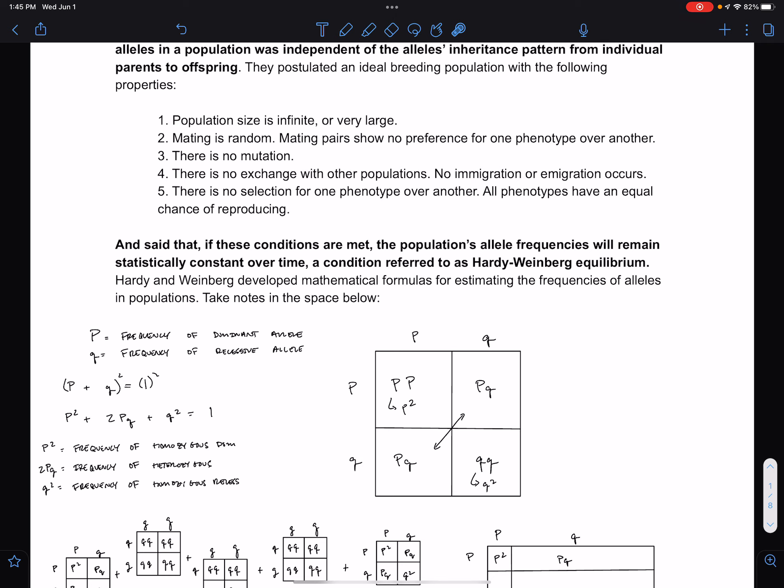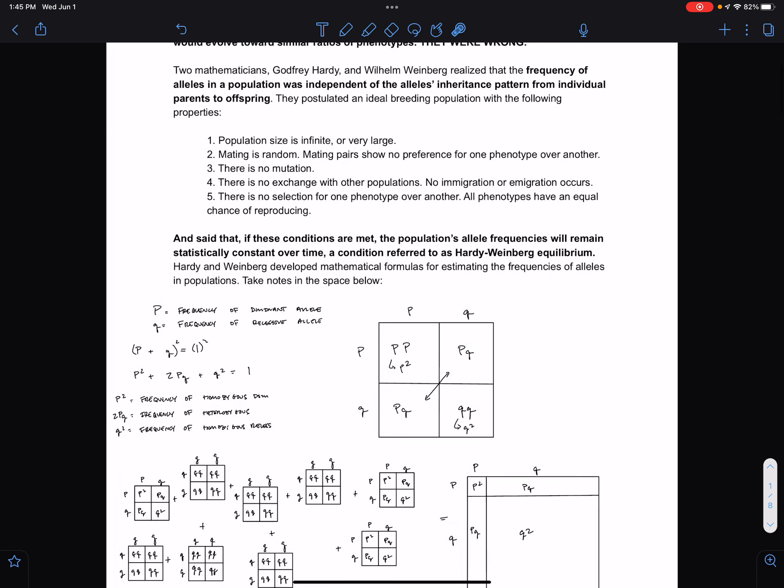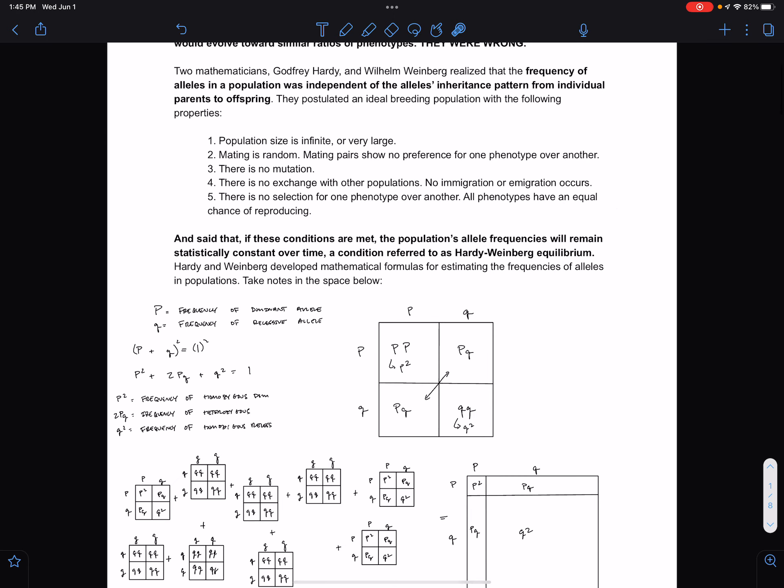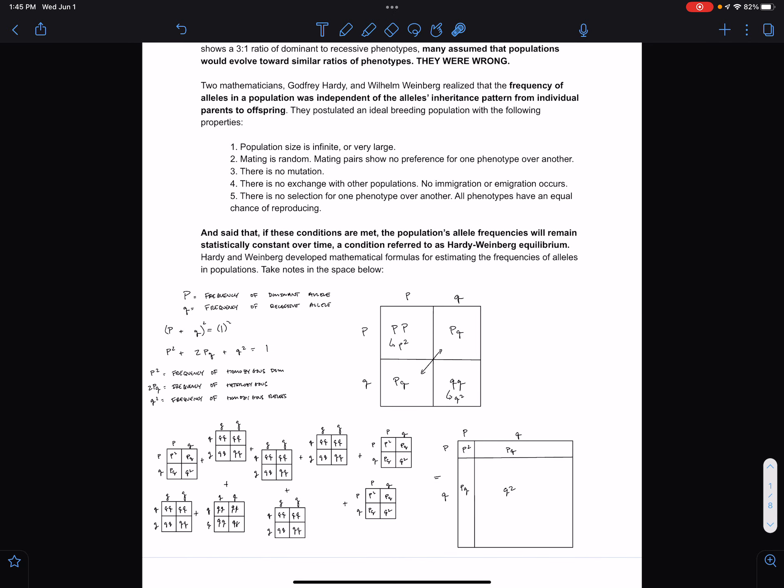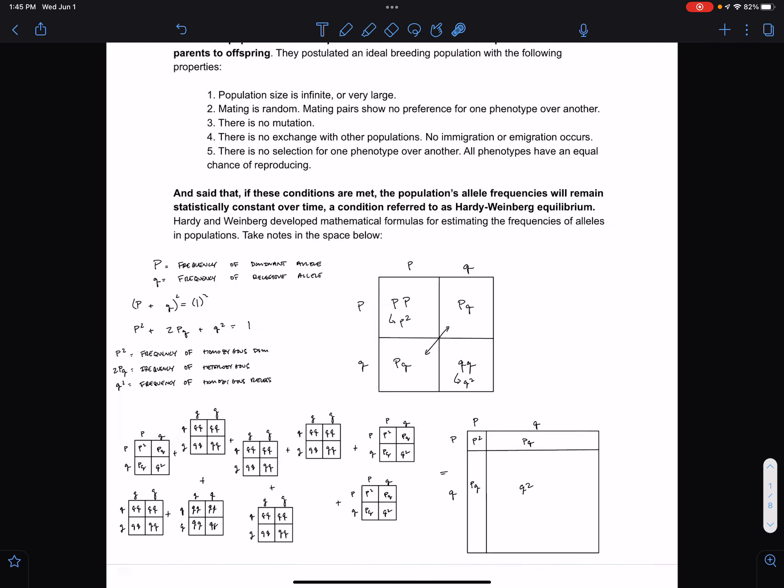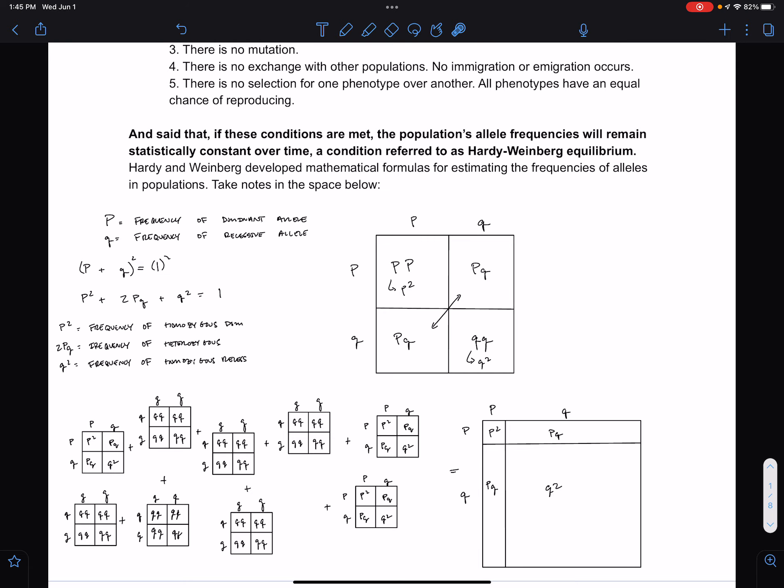Is our population size small? Is mating non-random? Is there some sort of sexual selection happening? Is there a mutation that's occurred in the population? Has there been exchange with other populations? Or is there selection for or against a particular phenotype? So we can use our list in order to determine why we see evolution occurring within our population.